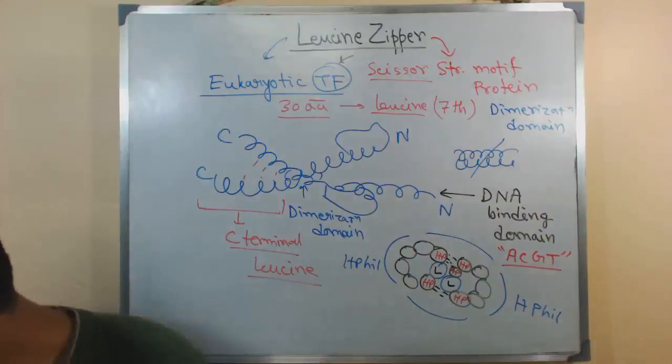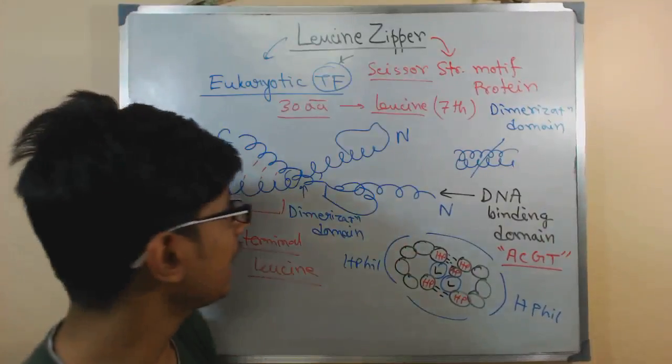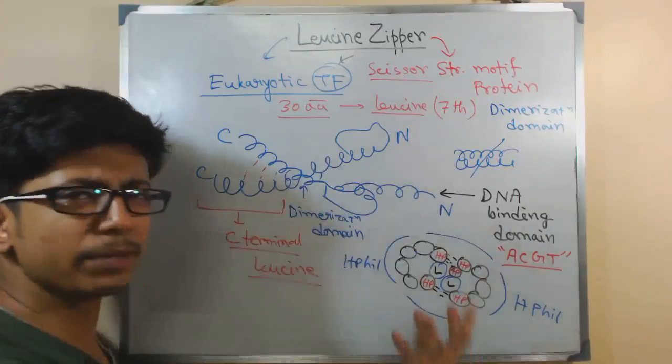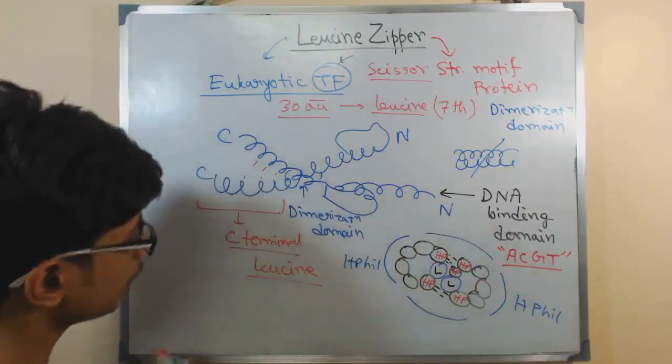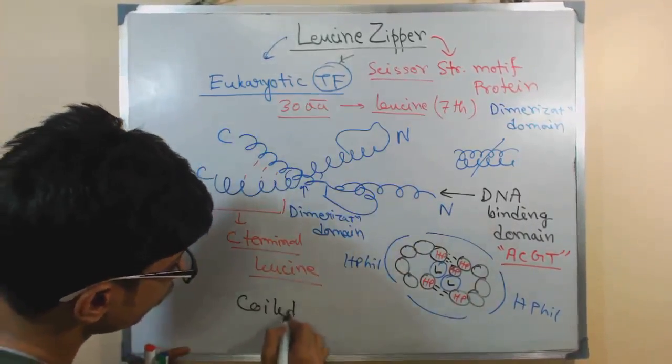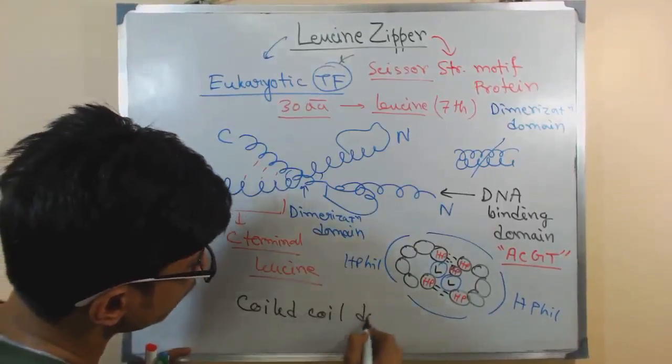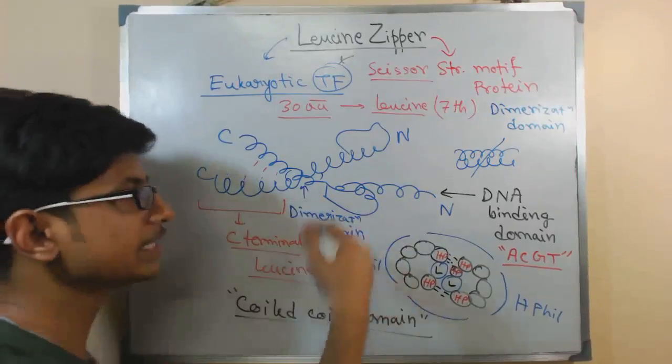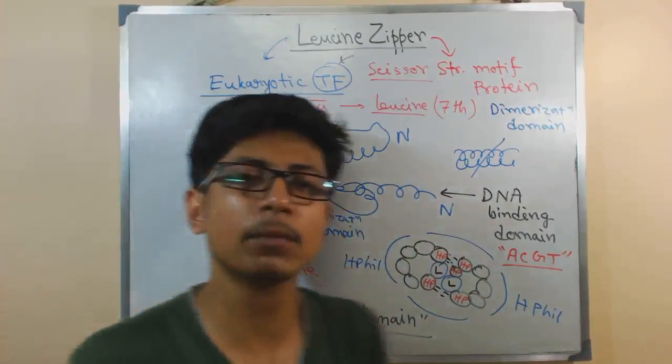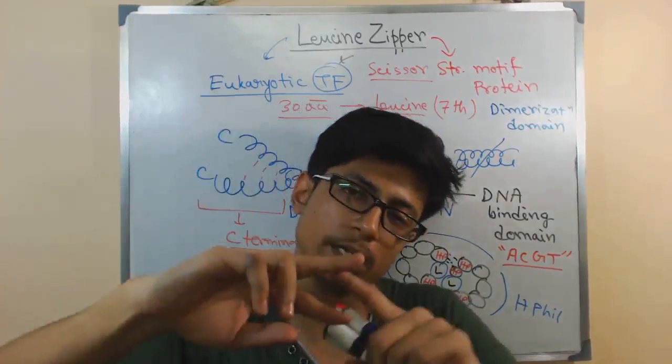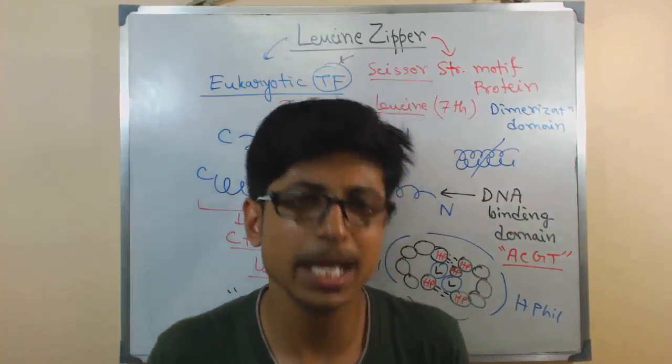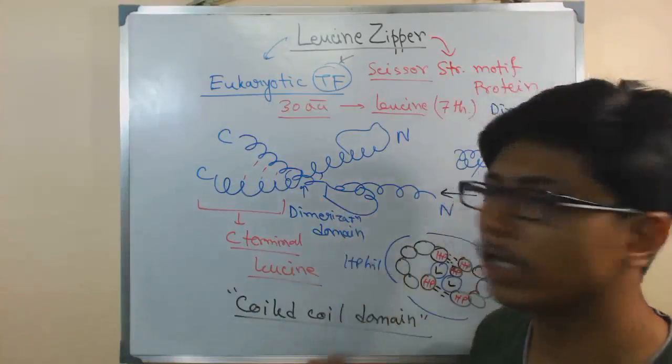Though it is found also in prokaryotes, mainly it is a feature of eukaryotic cells. There is another name for this structure called the coiled-coil domain. Coiled-coil domain means alpha helix is itself a coil, and if there are more than one alpha helix attaching to itself, by any means we call it a coiled-coil domain. This is another example of coiled-coil domain.